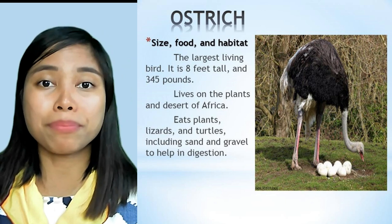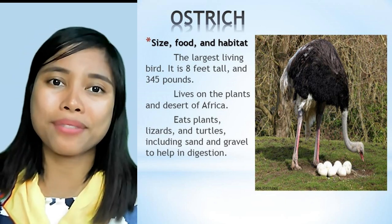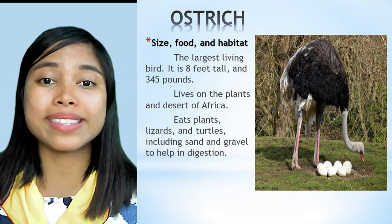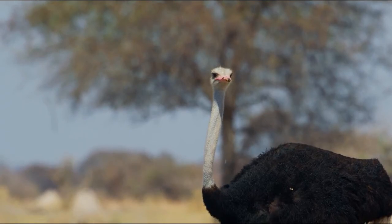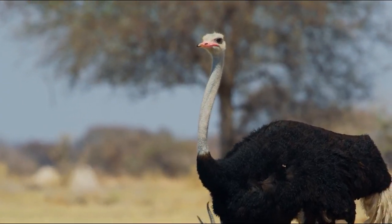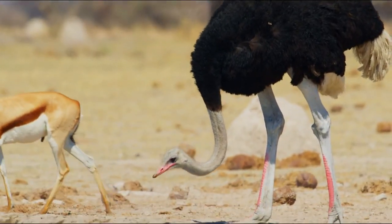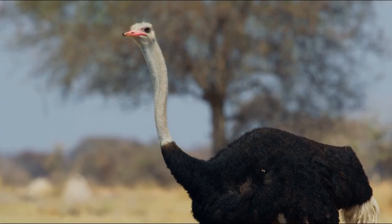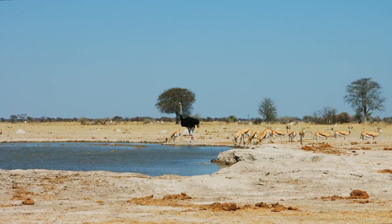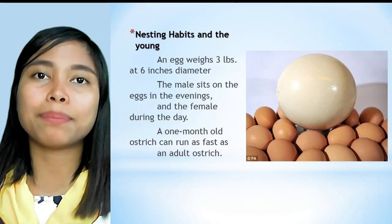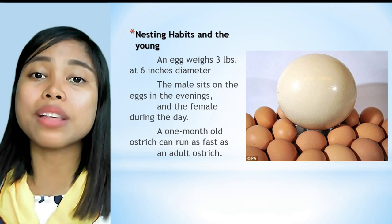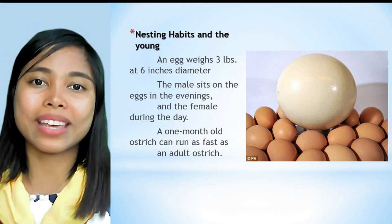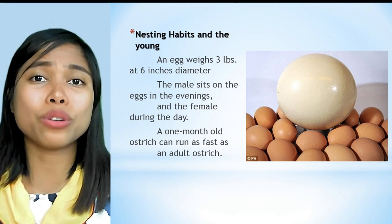The ostrich is the largest living bird, standing eight feet tall and weighing 345 pounds. It lives on the plants and deserts of Africa and eats plants, lizards, and turtles, including sand and gravel to help digestion. The ostrich is the only bird with two toes on each foot. It can take 15 footsteps at 64 kilometers per hour, and its lifespan is up to 70 years. An ostrich egg weighs three pounds with a six-inch diameter. The male sits on the eggs in the evening and the female during the day. A one-month-old ostrich can run as fast as an adult. Females lay as many as 10 eggs.